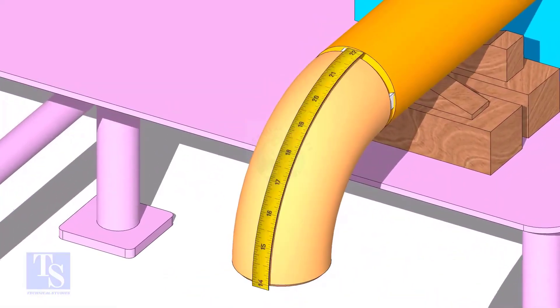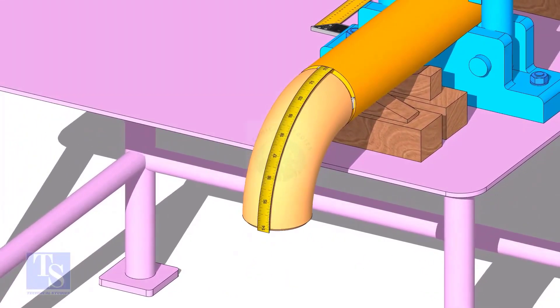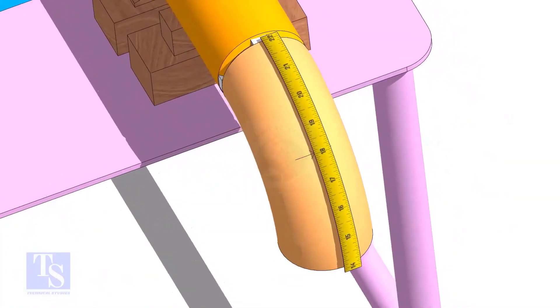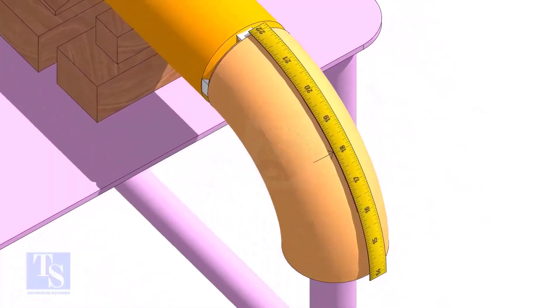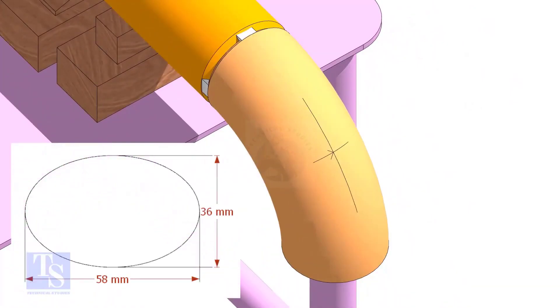Measure the outer circumference of the elbow and mark the half circumference on the center line, as shown. Draw the elliptical circle on the elbow and cut the opening.